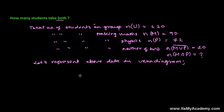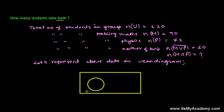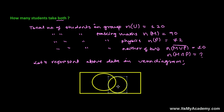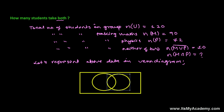To make the Venn diagram, I need to draw a rectangle, and then two circles because we have two subjects. The subjects are represented by the circles. So here, U is 120. Now, let me suppose this circle is representing M and this circle is representing the students which are learning physics.